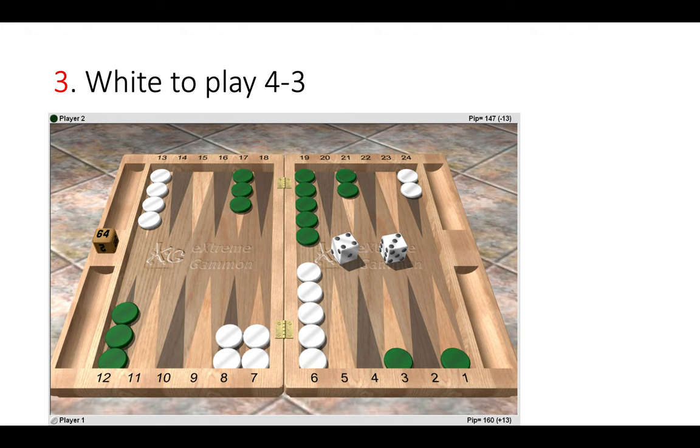One checker from the 6 and one checker from the 7. But of course it seems so natural to hit and then make the splitting play to separate our back checkers and fight for the advanced anchor. But that is a big blunder.